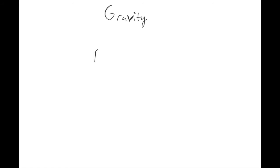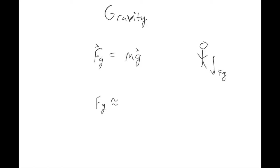Today we're going to be talking about gravity some more. So far in the class, we've seen that the force of gravity is equal to mg. So if we had our person standing on the earth, they felt the force pointing down on them for gravity. It's going to turn out that this equation is really just an approximation. Now we'll introduce the full version of Newtonian gravity.